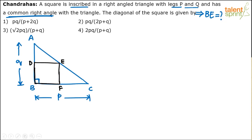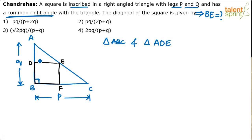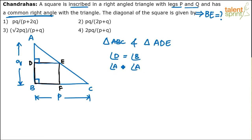BE is what we need to find — or equivalently DF. Now observe the two triangles: triangle ADE and triangle ABC. In triangles ADE and ABC, angle D is also a right angle — it's a perpendicular line, and since it's a square, DE is parallel to BC, making angle D equal to angle B.